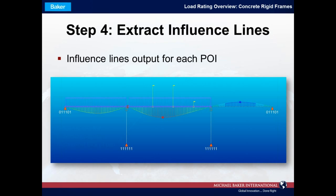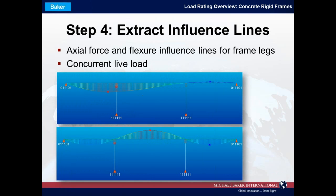Once we've selected these points of interest, we extract influence lines for them. Here is the influence line for moment at the face of the pier, extracted using MIDAS. The crosshair symbol at the top of the left pier indicates the point on the structure for which the influence line has been extracted. The force effect shown is moment, and here you can see the HL-93 truck plus lane load placed on this influence line to create maximum negative moment at this location — portions below the superstructure are negative moment, portions above are positive moment.